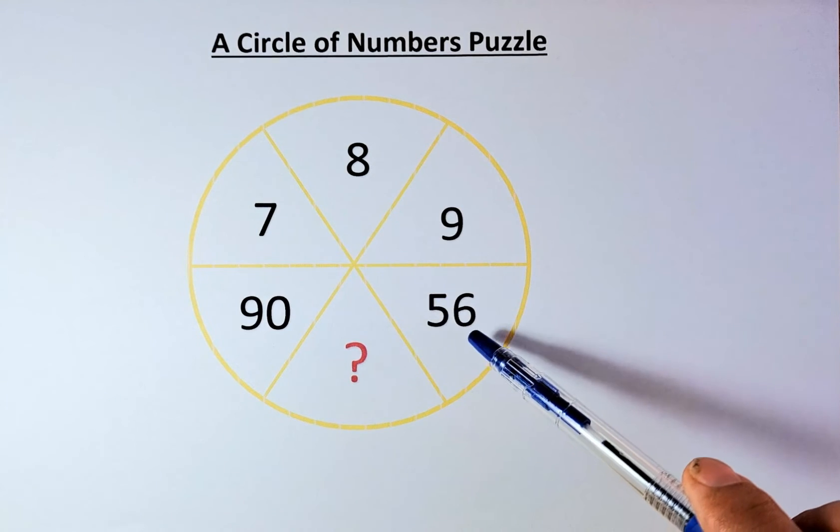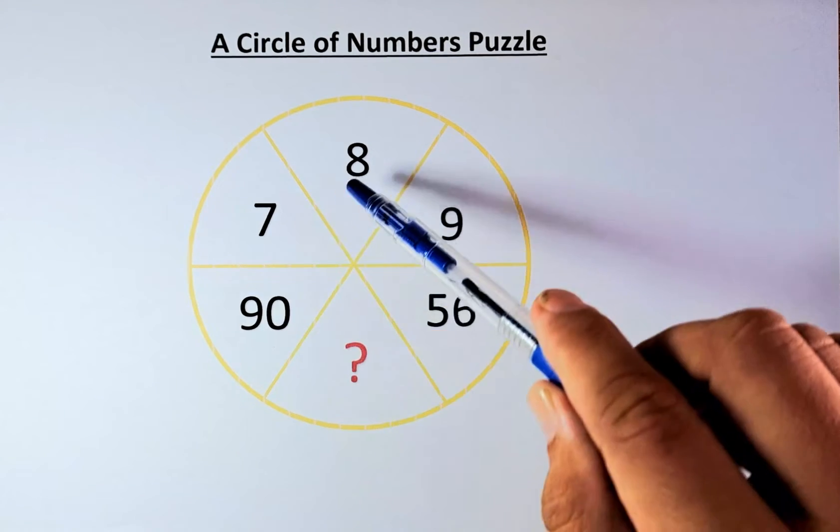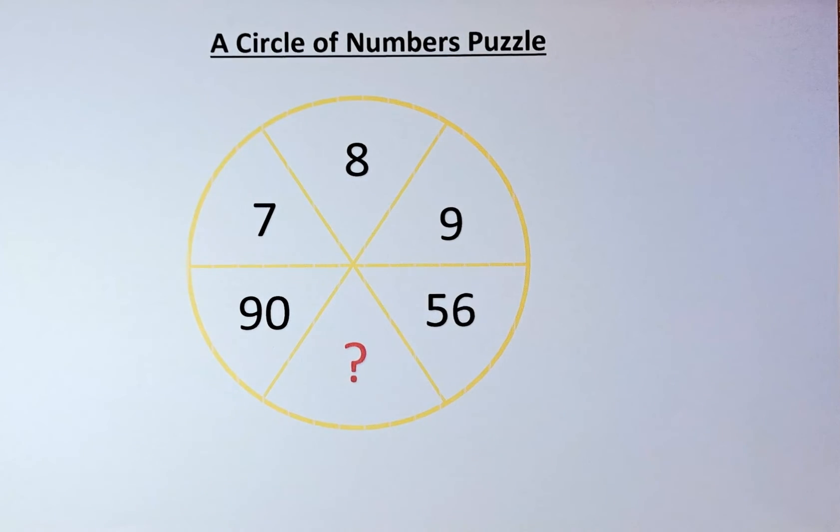7 equals to 56, 9 equals to 90, and 8 equals to question mark. Without further ado, let's solve this problem.